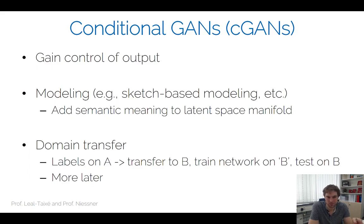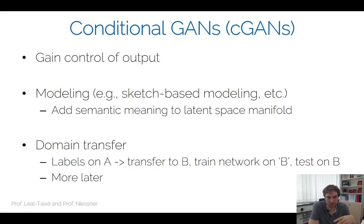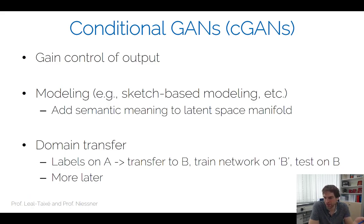Domain transfer is one relevant conditional application: for example, transferring day images to night images to augment self-driving car training data. There has been tremendous progress in conditional generation in recent years, particularly for the entertainment and content-creation industry. The key question is: how do we make GANs conditional?